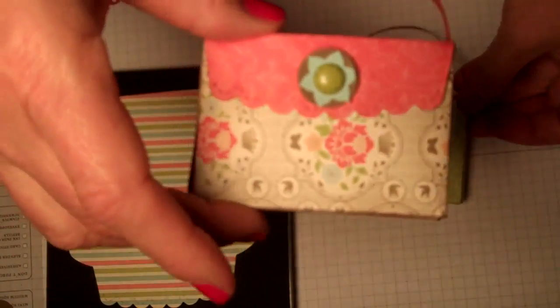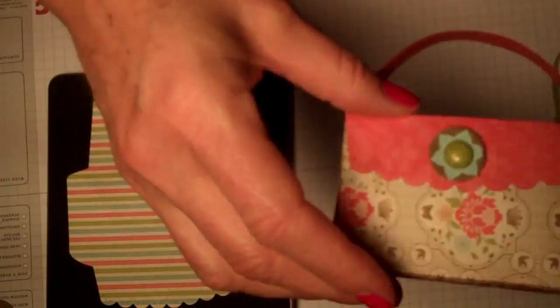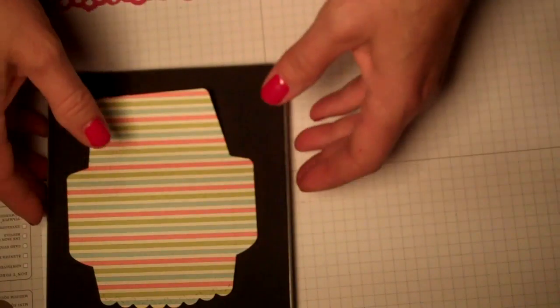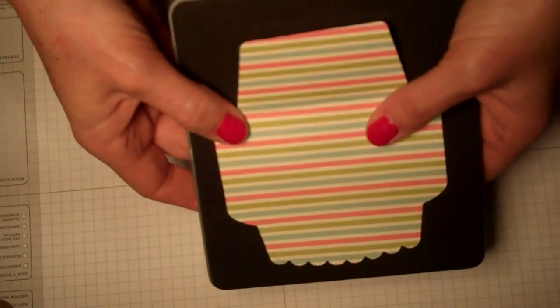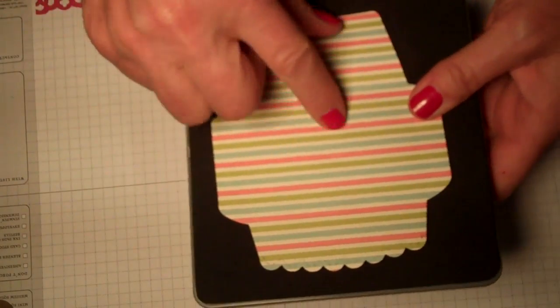Really, what you need to make this is a die, your Big Shot, and your scallop envelope die. Now you can see I've laid a piece of DSP on here to give you an idea of what the outline of the die looks like.